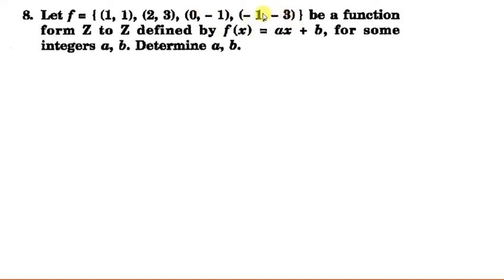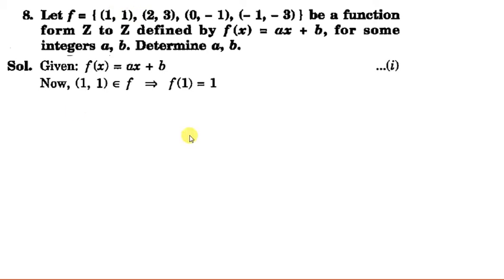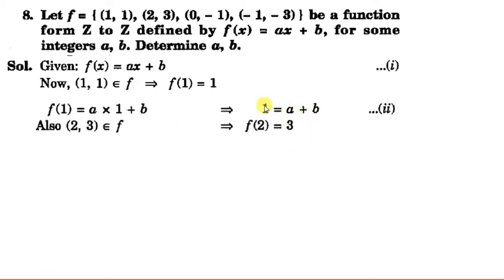With the help of these we have to find a and b. So we use (1,1) belongs to f, so f(1) is equal to 1, and f(1) from this expression is equal to a plus b, so we get a + b = 1. Now (2,3) belongs to f, it means f(2) is equal to 3, and f(2) is from here 2a + b.